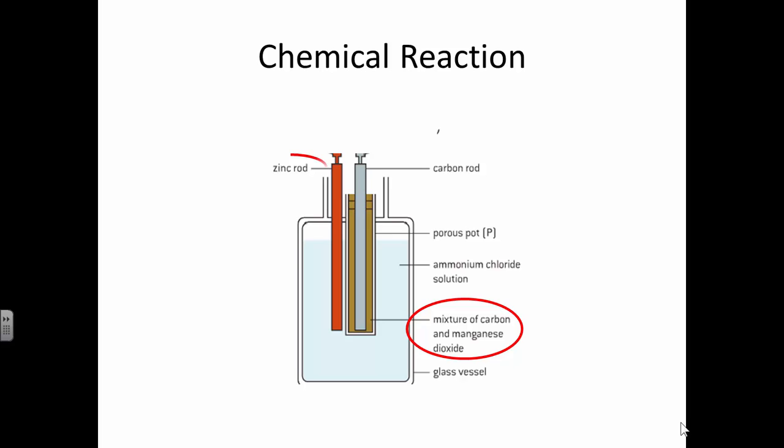And we have a metal which is the zinc rod. Now you know the zinc likes to release electrons. It likes to be ionized and to react with the dioxide. And that will release electrons.